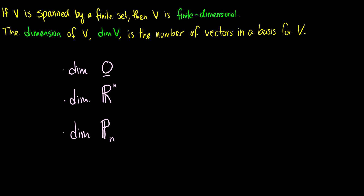Welcome back to linear algebra. In this video, we'll introduce the concept of dimension. If a vector space V is spanned by a finite set, we're going to call V finite dimensional. The dimension of V, shortened to dim V, is the number of vectors in a basis for V.